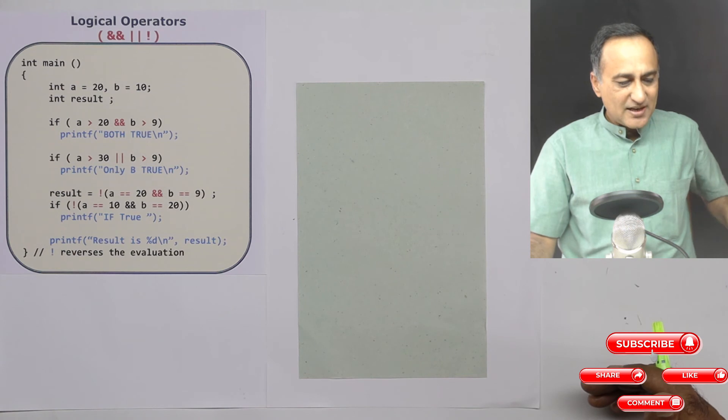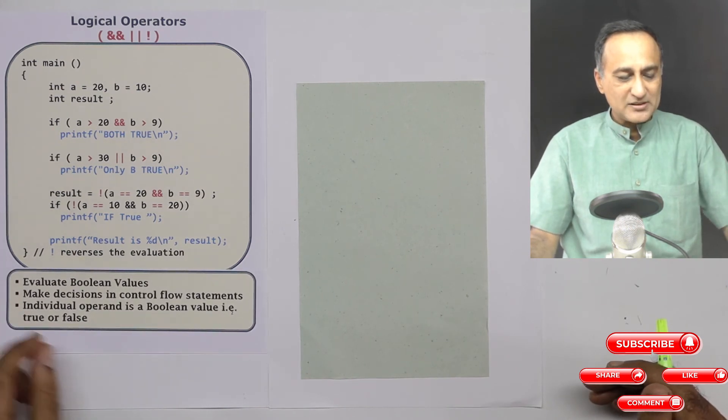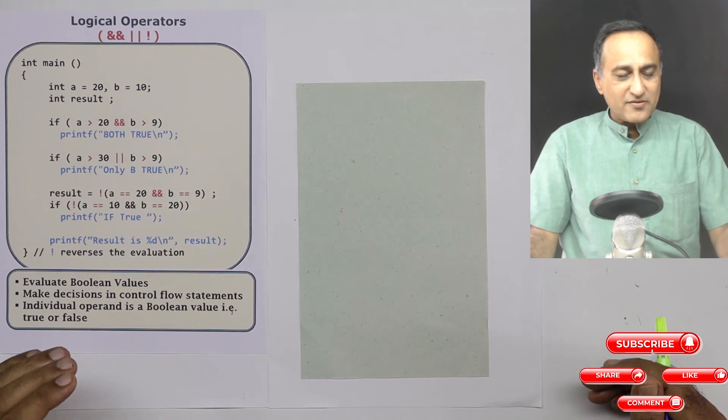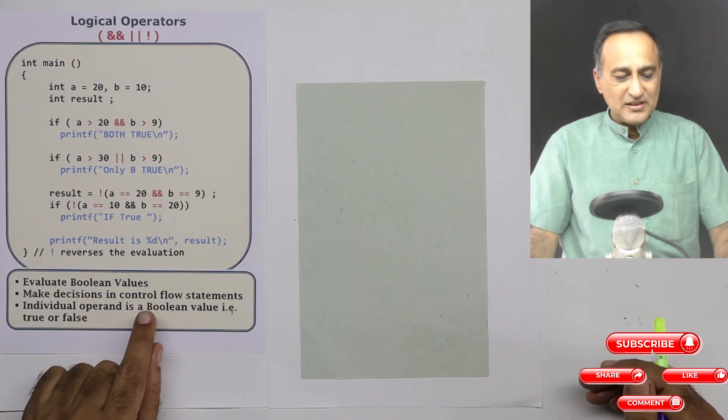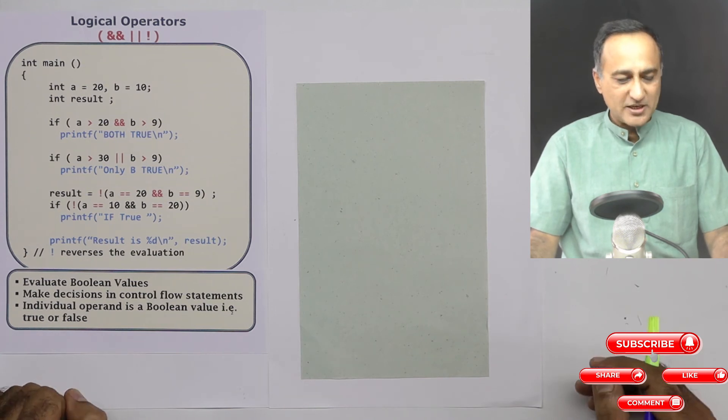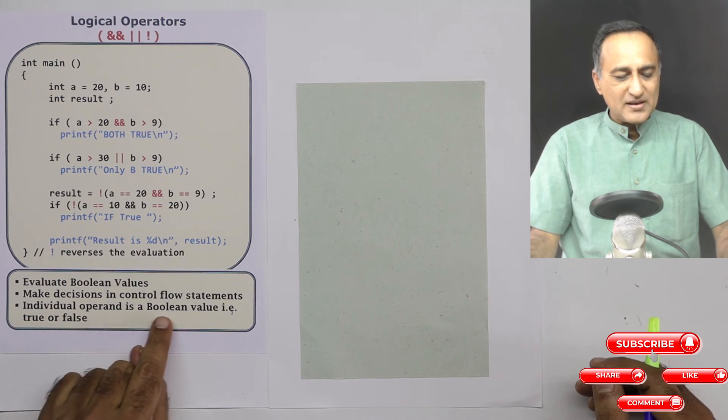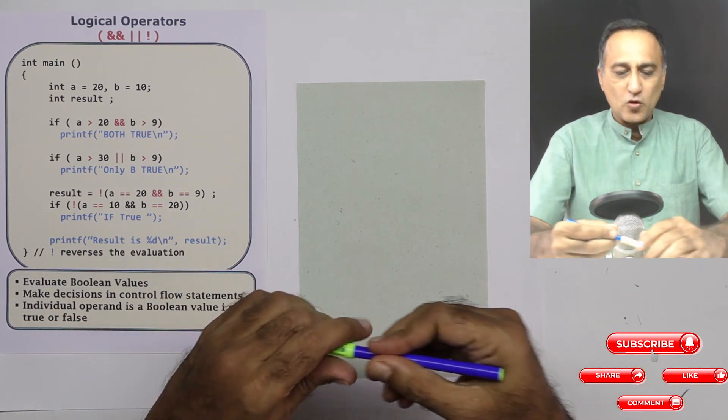Now you need to understand a few important aspects of these logical operators. They are extensively used along with relational and equality operators in control flow statements like if else and looping statements. There's an interesting word here: individual operand is a Boolean value, that is it is true or false.